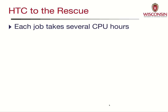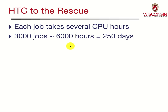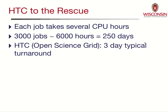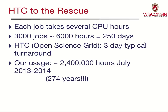Each job is typically going to take several CPU hours for the type of algorithm that we use. So if you had 3,000 jobs to run, that would take you 6,000 hours, which is about 250 days — and that's not an acceptable turnaround time. So with the help of the Center for High-Throughput Computing here on campus, we've ported our algorithms to run on the Open Science Grid. Using many processors running in parallel, we can get a typical three-day turnaround for a set of jobs like this. From July 2013 to July 2014, we used 2.4 million hours, which comes out to 274 years of computing time.